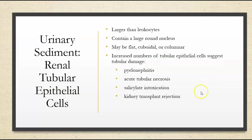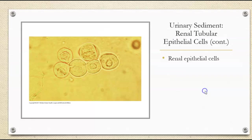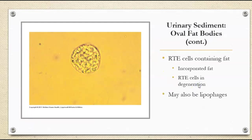When we look at tubular — renal tubular epithelial cells — they're larger than white cells. They can have a round nucleus and can be flat, cuboidal, or columnar. We'll see an increased number of tubular epithelial cells in pyelonephritis, acute tubular necrosis, salicylate intoxication, or if the patient has gotten a kidney transplant that is in the process of rejection. Here are some renal epithelial cells, almost cuboidal.